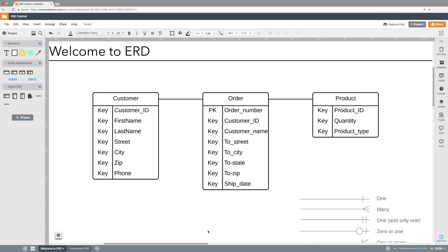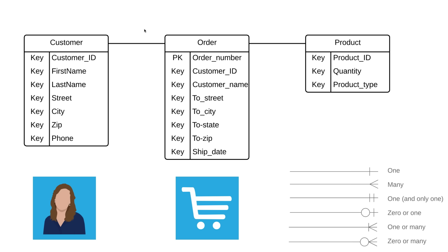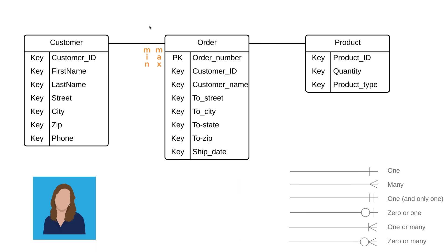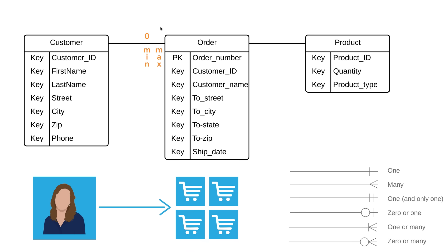Let's talk about the relationship and cardinality that exists between a customer and an order. The best way to do this is to think about it logically — what is the minimum number of orders a customer could have, and what's the maximum? A customer could exist but have zero orders, so to show that we'll use the zero sign. For the maximum, a customer can have infinite orders — in the case of Snuggies, you can never just have one — so we'll use the zero-or-many crow's foot notation.